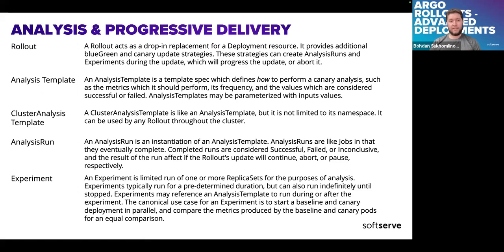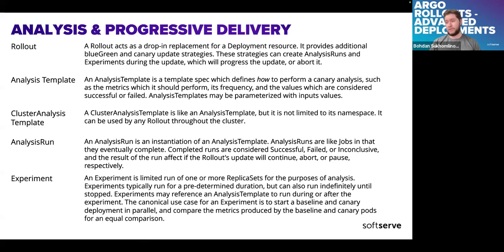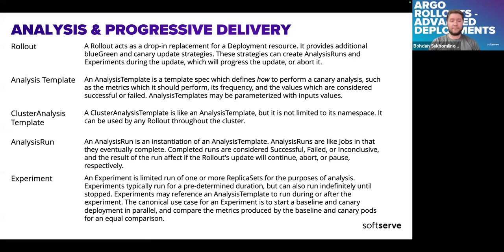During deployments, using analytics templates, ArgoRollouts creates an 'AnalysisRun'. It can be a pod if you're creating a job, or it can be some metrics check. Inside the AnalysisRun, which is automatically generated, you can check what's happening and what results are there. About experiments: you can create ephemeral pods without sending any traffic, creating experiments for yourself outside of the deployment process - no need to update your production manifests. You want to deploy something just to check how it behaves.